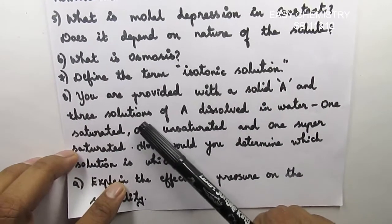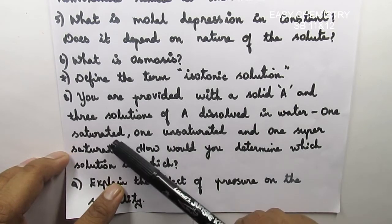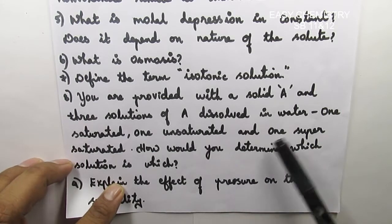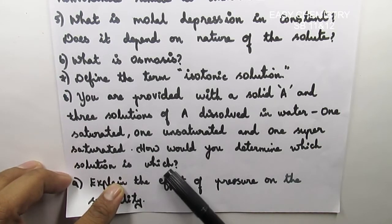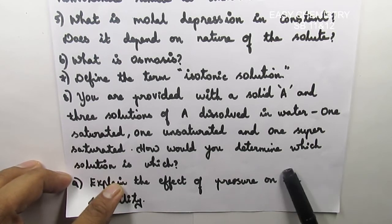You are provided with a solid A and three solutions of A dissolved in water - one saturated, one unsaturated, and one supersaturated. How would you determine which solution is which if they are unlabeled? This is very important.